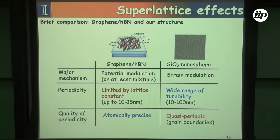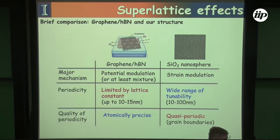To do a side-by-side comparison of what we want to do: with hexagonal boron nitride, the major mechanism giving superlattice periodicity that allows us to see interesting high-magnetic-field effects is potential modulation — electrostatic potential modulation between the graphene and the boron nitride. We can do the same sort of thing with nanospheres, but here the modulation should result directly from the strain of the graphene being draped over the nanoparticles.